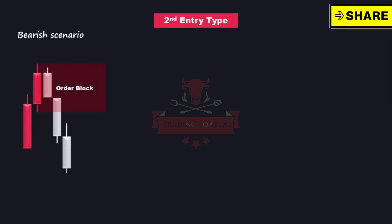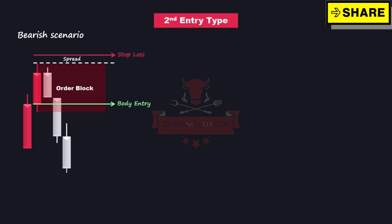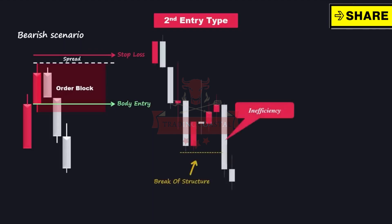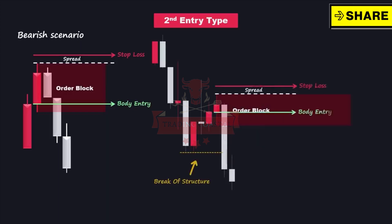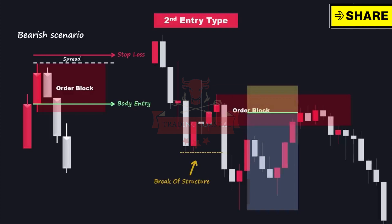The second entry type is referred to as the body entry. Once a valid order block is identified, the entry is placed based on the body of the candle. For sell positions, the stop loss is set a spread size above the higher wick of the order block. This entry method typically offers a higher reward-to-risk ratio compared to the wick entry because the stop loss is tighter. However, this approach carries a slightly higher level of risk — price may only touch the wick of the order block and move in the anticipated direction without triggering your order, resulting in a chance of missing out on a profitable trade opportunity.